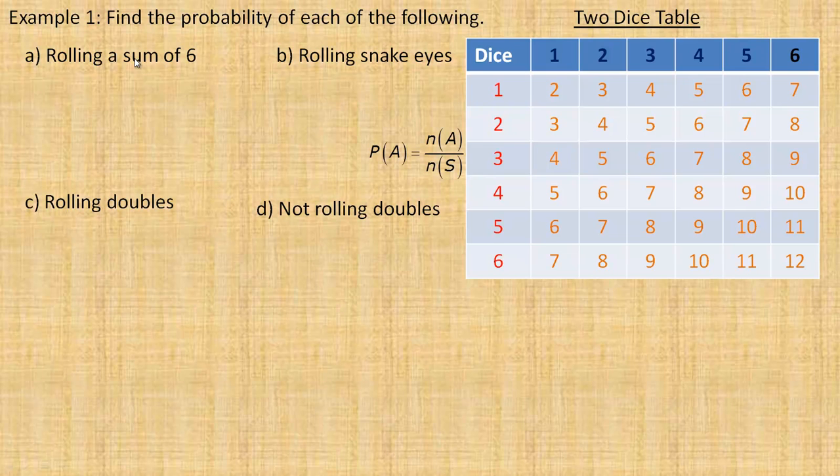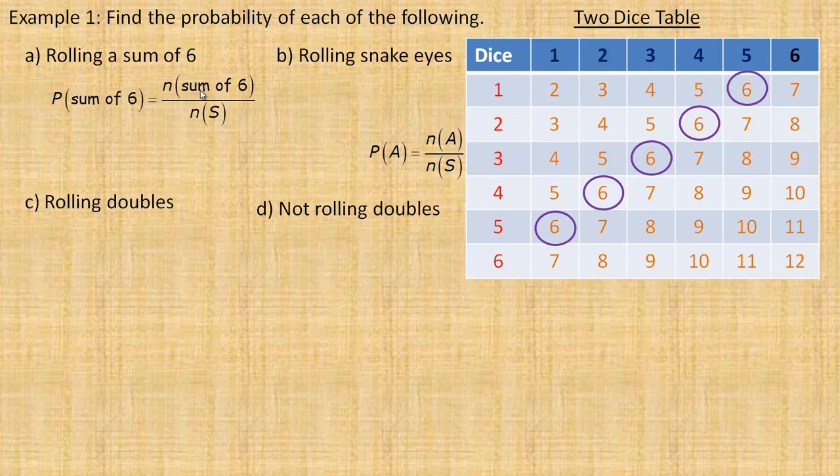So we're going to find the probability of each of the following happening. Rolling a sum of 6. So a sum of 6, these are all the sums of 6. You get a 1 and a 5, a 2 and a 4, a 3 and a 3. This would be a 4 on one dice and 2 on the other, and a 5 on one and a 1 on the other. So notice if you count them, there are 5 ways of that happening. So the probability of a sum of 6 occurring is the number of ways that a sum of 6 can occur divided by the size of the sample space. I'm writing it out just for the sake of this particular tutorial to make it a little bit more explicit what exactly we're doing here.